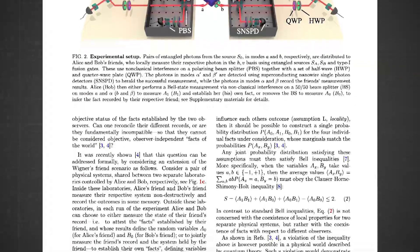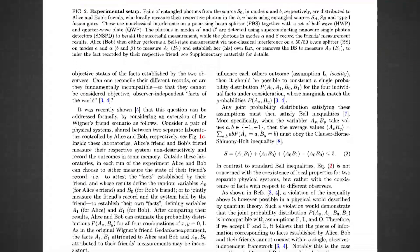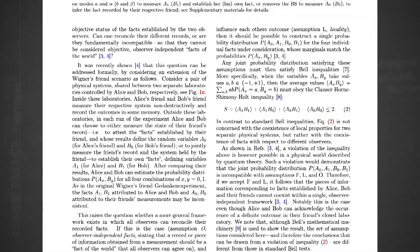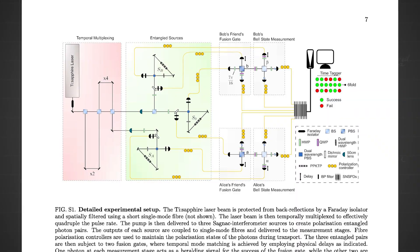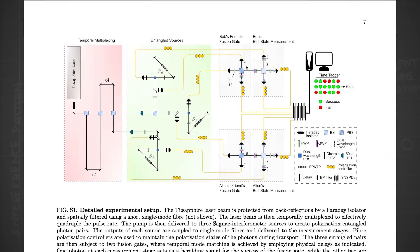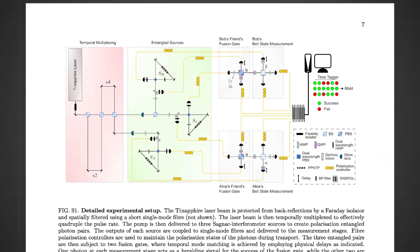Wigner's thought experiment was put to the test by a team of physicists at Heriot-Watt University in Edinburgh, with the results being published in February 2019. The experiment tested for the validity of observer independence at the quantum level, similarly using photon polarization.